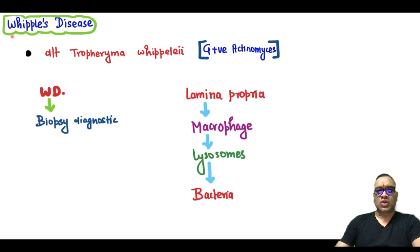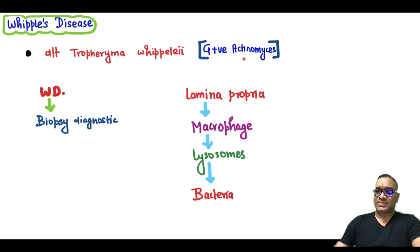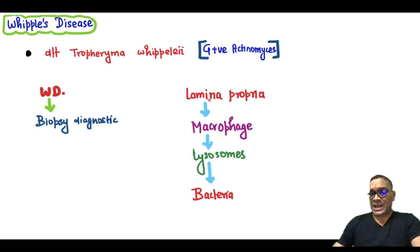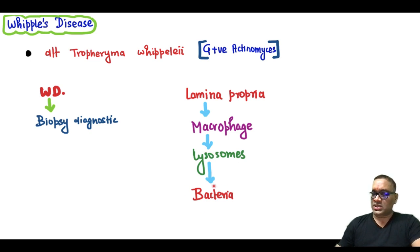Hello everyone. In this short, I am going to tell you about Whipple's disease, which is due to Tropheryma whipplei, a gram-positive actinomyces. Whipple's disease can be diagnosed on biopsy where the Lamina propria will be showing macrophages containing lysosomes, and these lysosomes will be having all the Tropheryma whipplei bacteria.